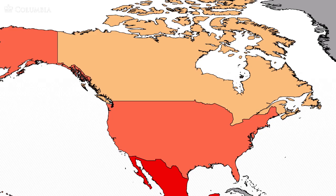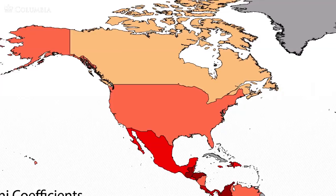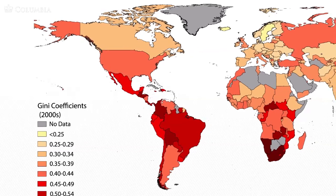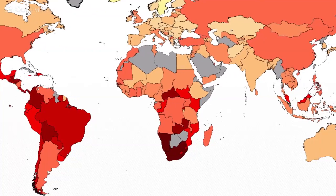Looking at this map, you can see a very interesting phenomenon: most of the Americas, with the exception of Canada, are shaded in red and quite unequal. The Americas as a whole, both North America and South America, are relatively unequal societies. Africa, for the countries where we have the data, is also rather unequal, and in comparison with India or other parts of Southeast Asia, Africa tends to rank relatively high in inequality.